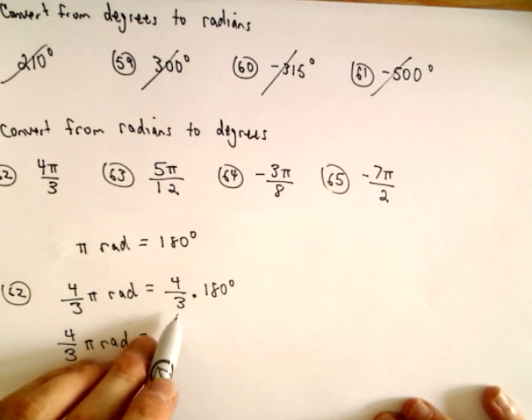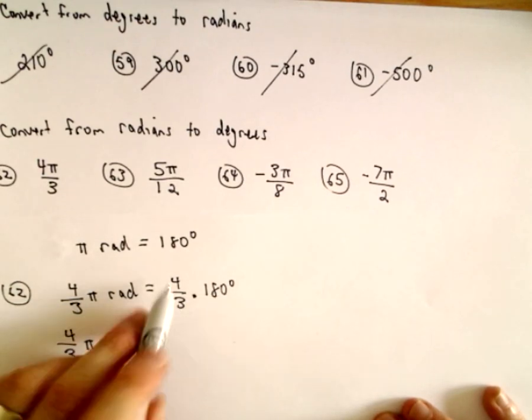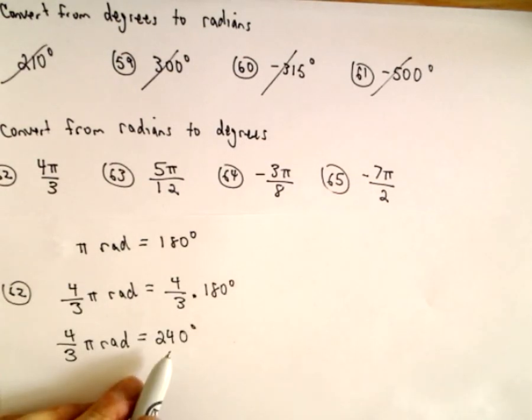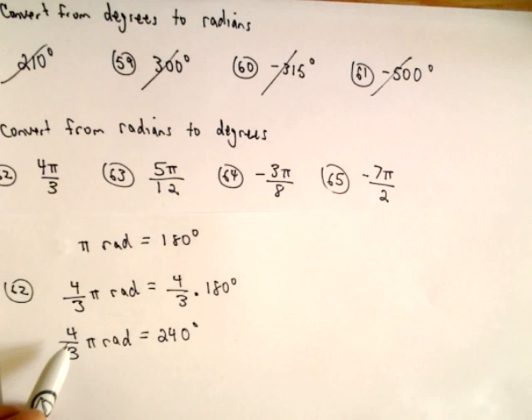Let's see, 180 divided by 3, that's going to be 60. 60 times 4 will be 240. So 240 degrees will be the same thing as 4 thirds pi radians.